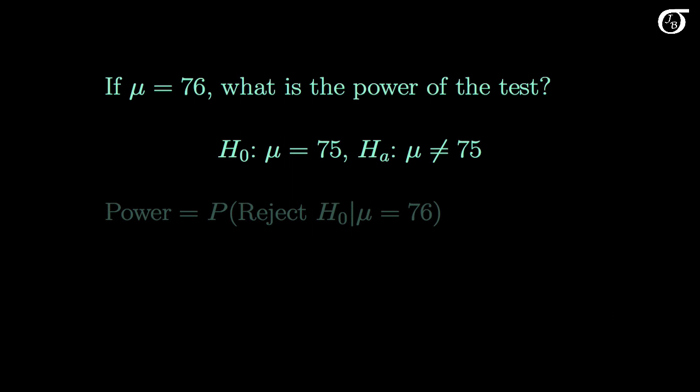Now we're ready for some power calculations. If the true value of the population mean mu is 76, what is the power of the test? Recall the null hypothesis is that mu is 75, so if mu really is 76, the null hypothesis is wrong. The power is the probability of rejecting the null hypothesis when it is wrong — here, the probability of rejecting given the true value of mu is actually 76.